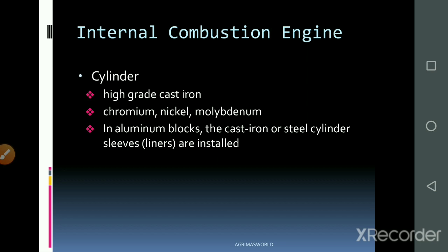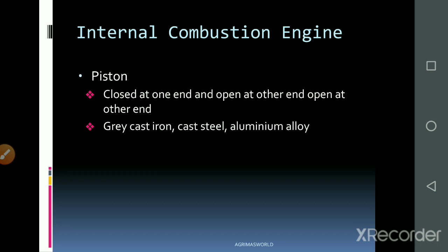Alloys of chromium, nickel, and aluminum blocks are used for the cylinder. Lining is also used — either cast iron lining or steel lining. Aluminum blocks are commonly used. Next, there is the main cylinder block which is built up as the main structural component.